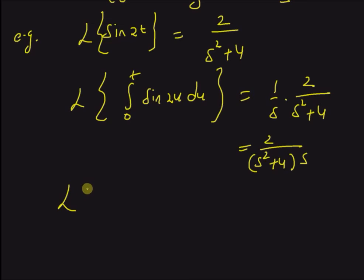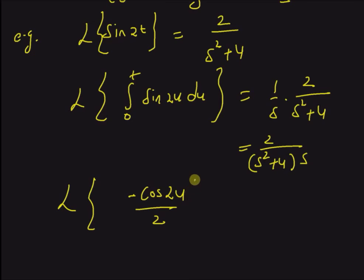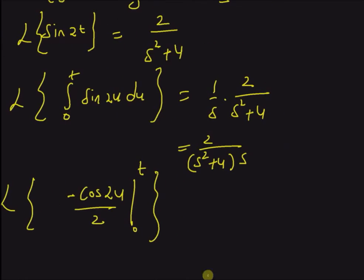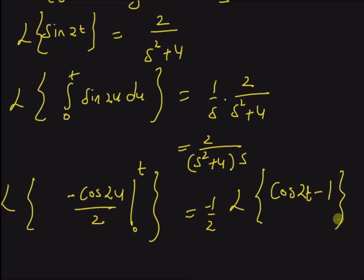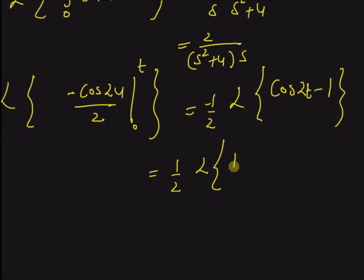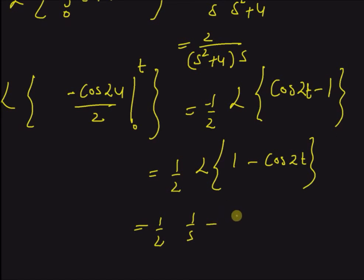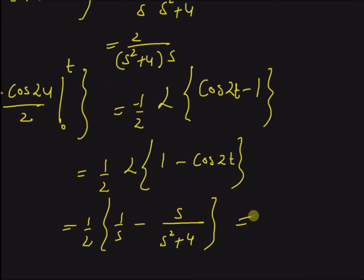We can also verify this result by computing the integral directly. The integral of sine 2u is minus cos 2u divided by 2, evaluated from 0 to t, giving minus cos 2t over 2 plus 1 over 2. So the Laplace transform equals 1 over 2 times the Laplace transform of 1 minus cos 2t, which is 1 over 2 times 1 over s minus s over s squared plus 4. Upon simplification this equals 2 over s times s squared plus 4. Thanks for watching.